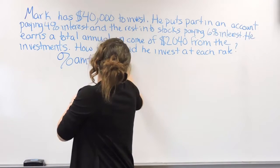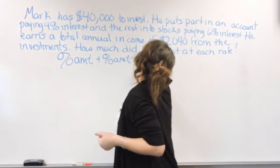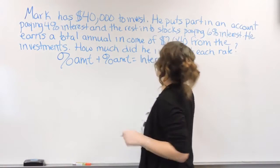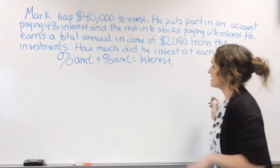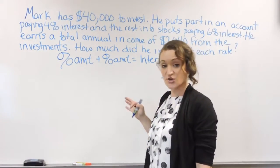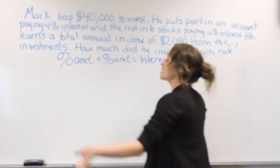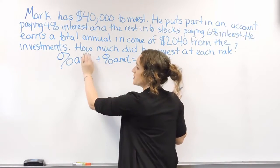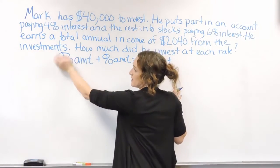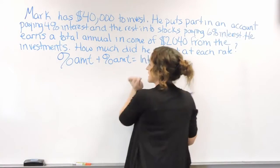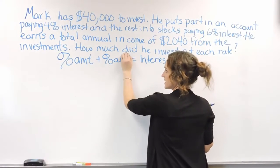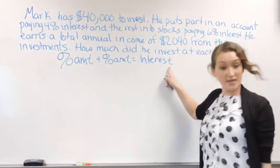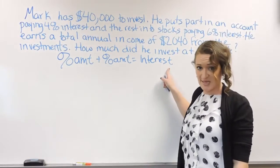There's a formula we can use to help us out here. It looks like this: percent times amount, plus percent times amount, is equal to the total interest. However much he put into each account at each percent, added together, equals the interest that he earned.